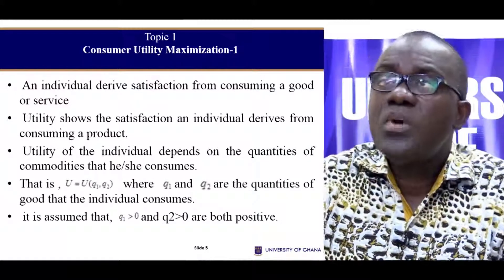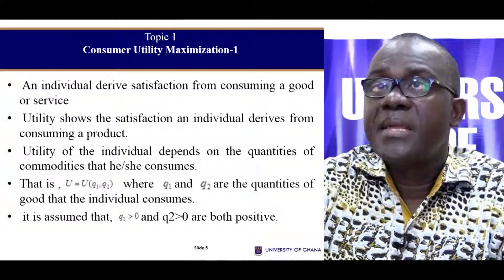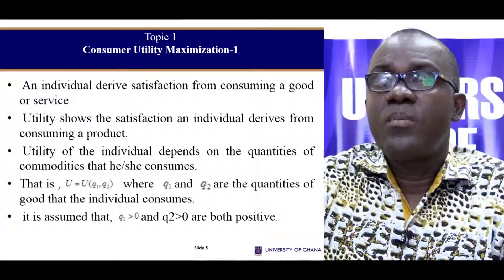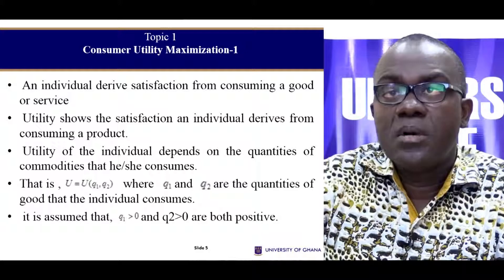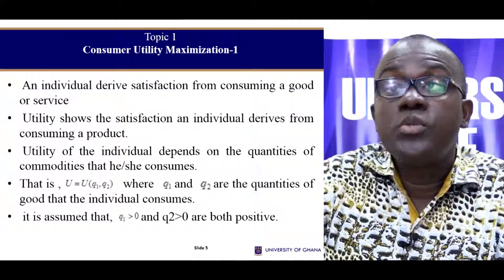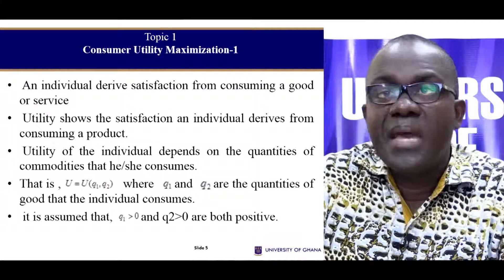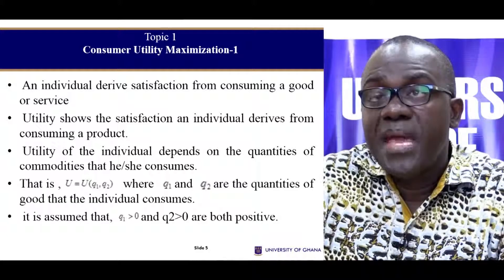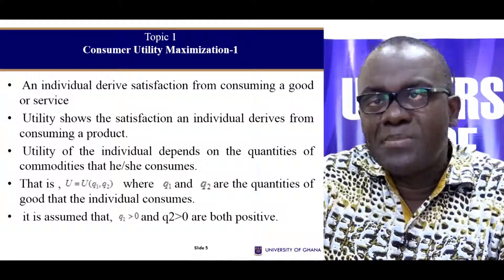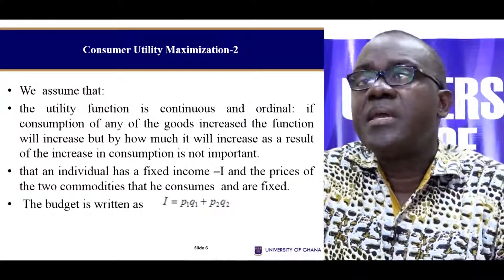Every individual tends to derive satisfaction from whatever he or she consumes, and this satisfaction — utility — is derived from whatever we do. Now assuming we consume only two sorts of goods, Q1 and Q2, there is a utility that we obtain from consuming these two goods. We will assume that these goods are positive quantities that the individual consumes. There should be some mathematical formula that links Q1 and Q2 and determines the utility or satisfaction of this individual.